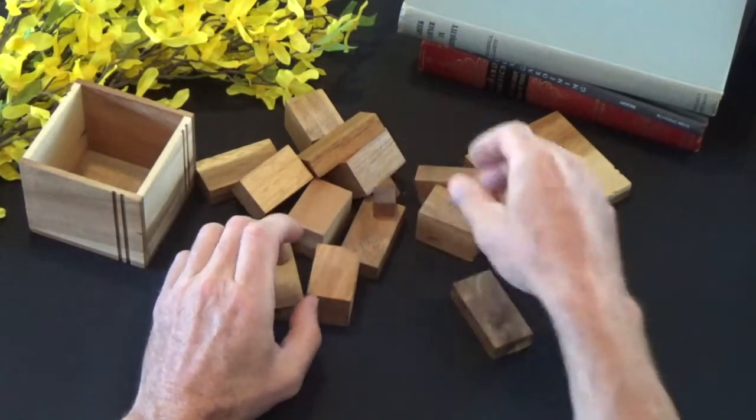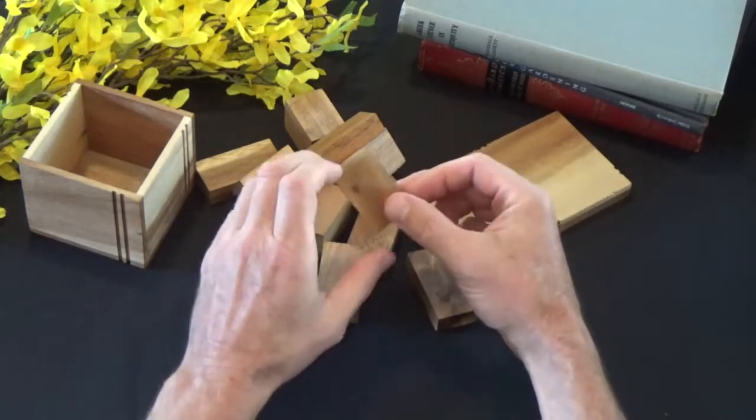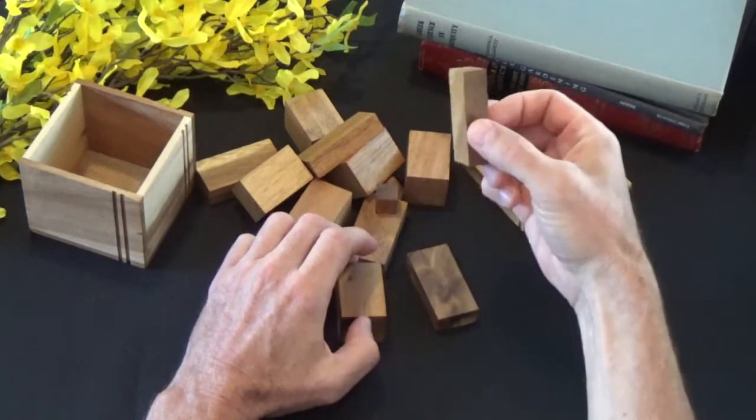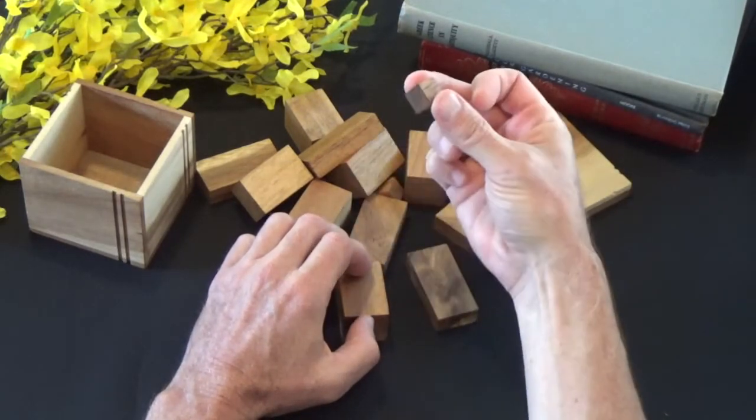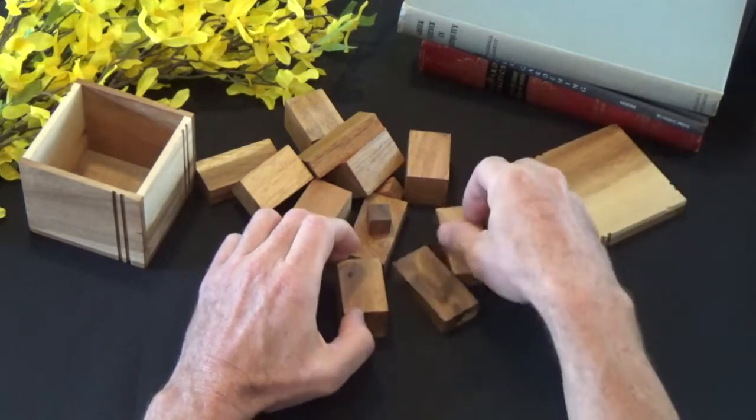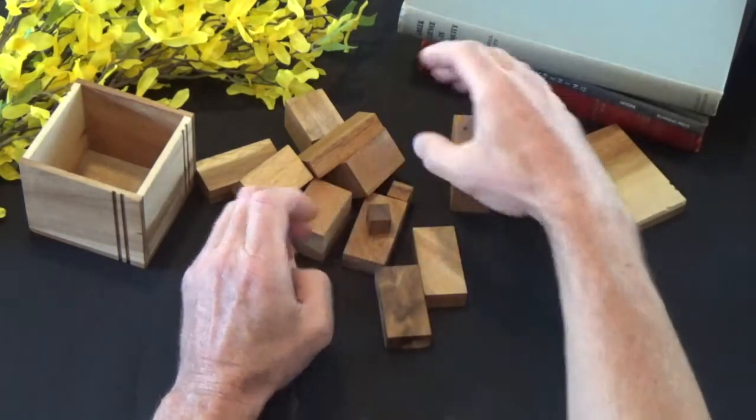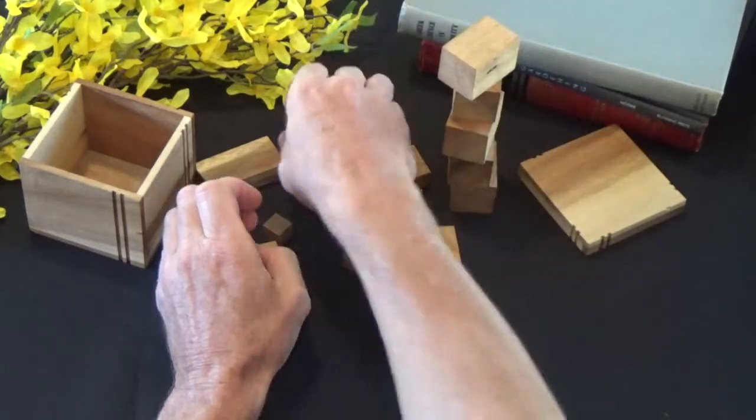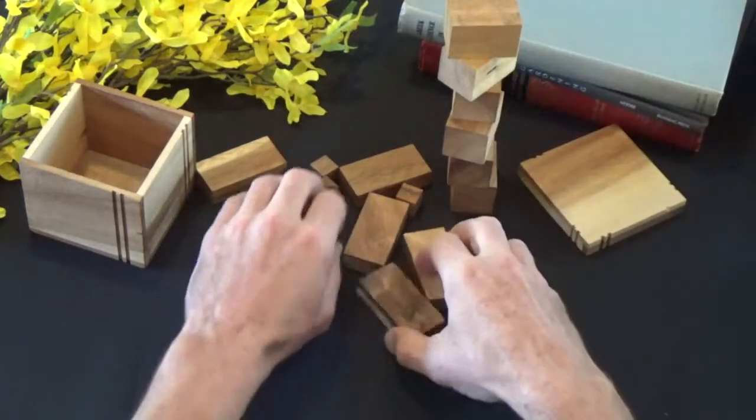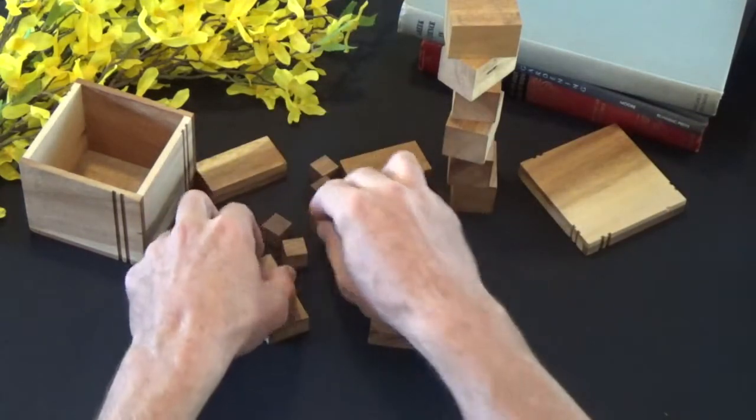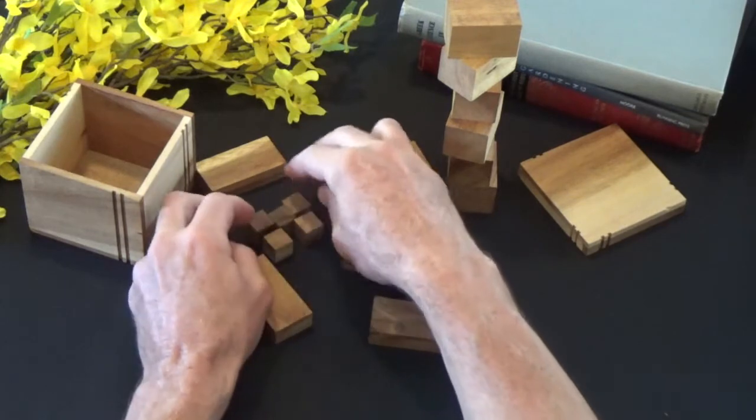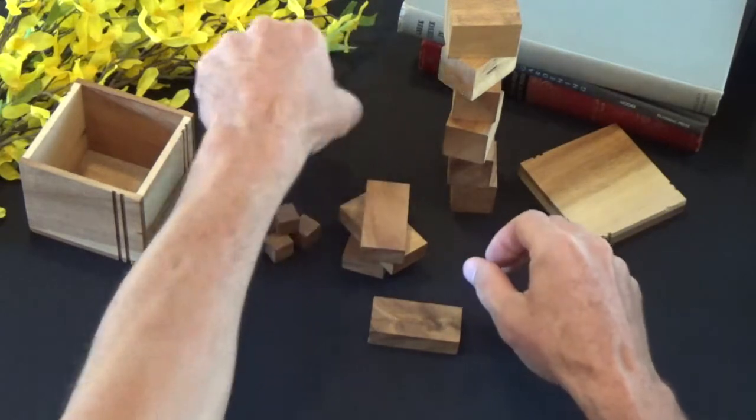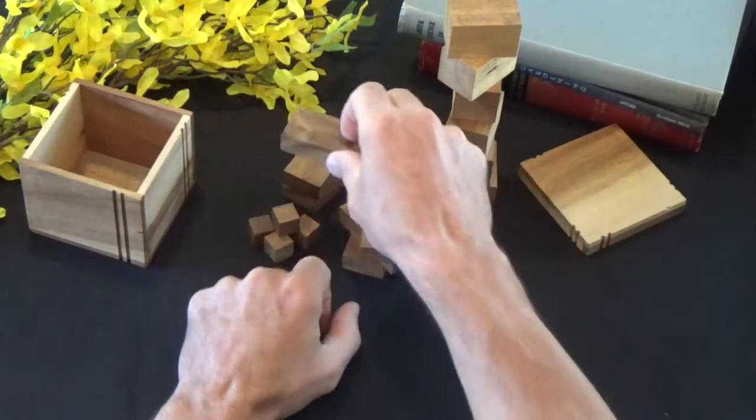So again there are 17 pieces here, there are three different shapes. So you have this shape, this shape, and this little cube shape. And what we have here are six of that particular shape, and five of the cube shapes, and then six of these shapes here.